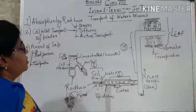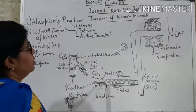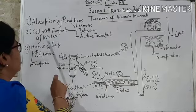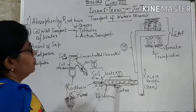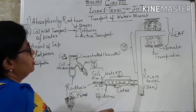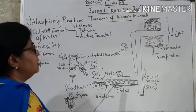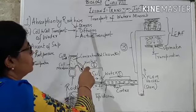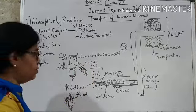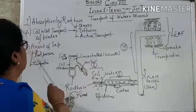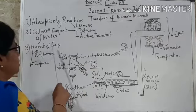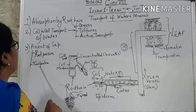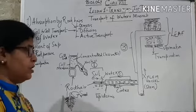After the root hair cells have absorbed water, the second step comes — cell-to-cell transport of water. Water is moved from root cortex cells all the way up to the xylem vessels by the process of osmosis, diffusion, and active transport. Lastly, the third step is ascent of sap, which involves two processes: root pressure and transpiration.